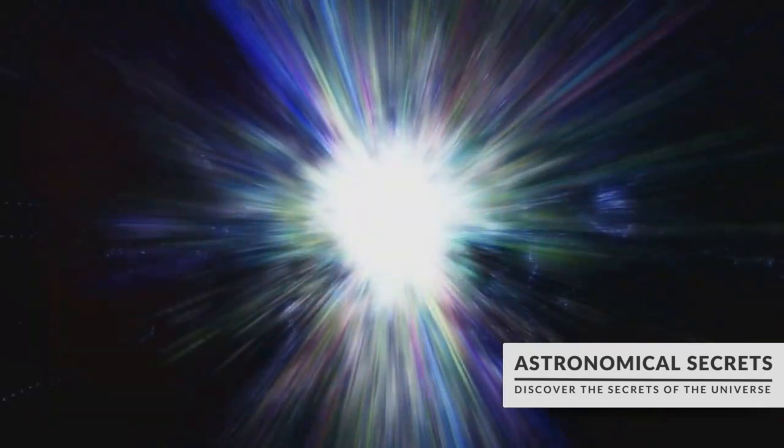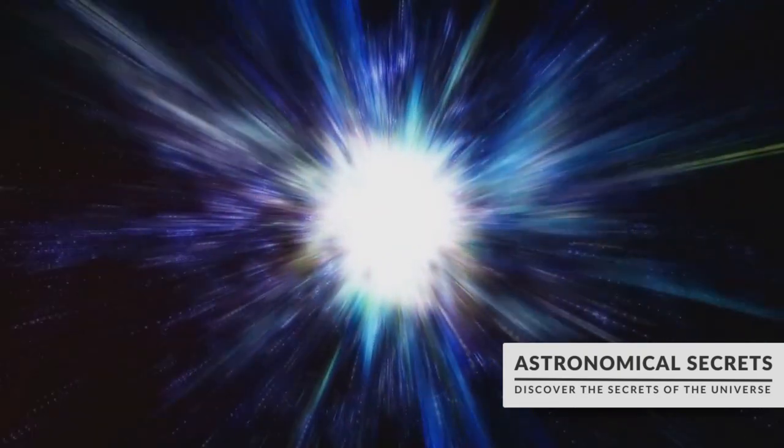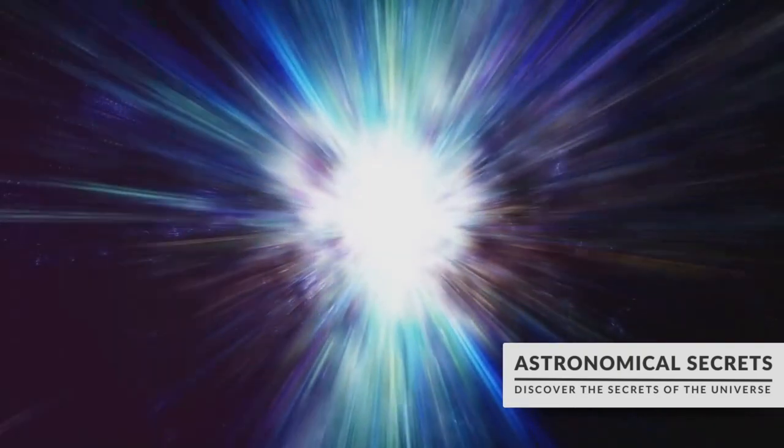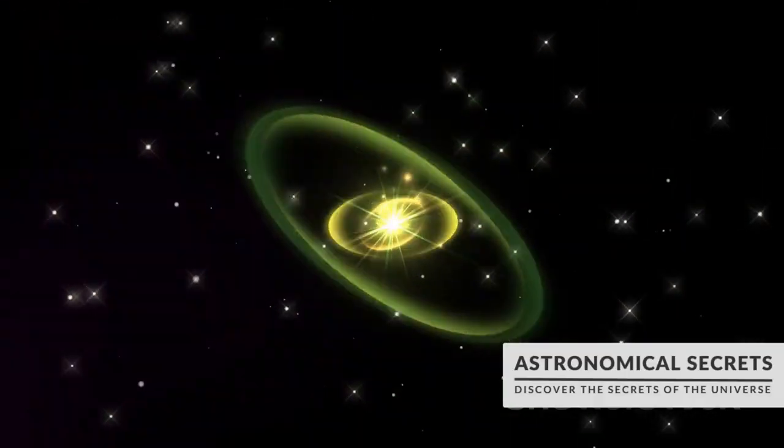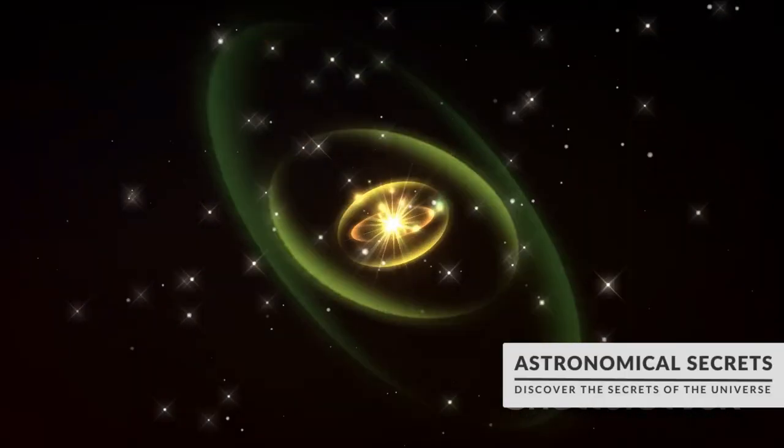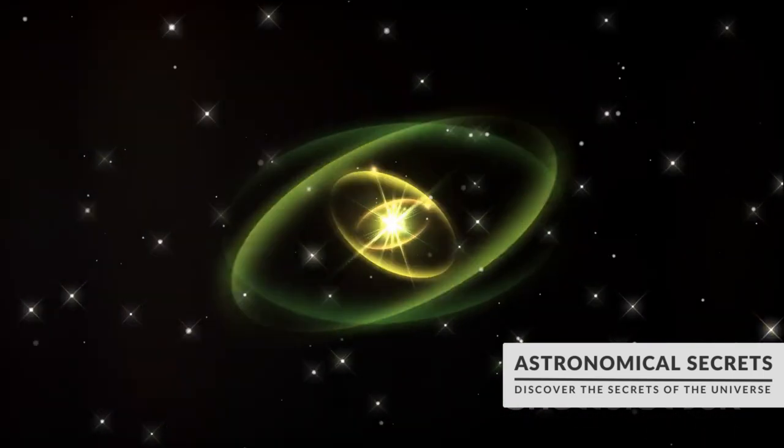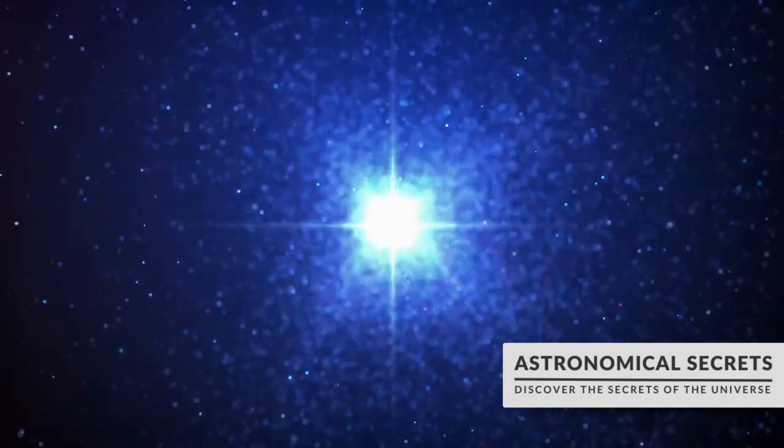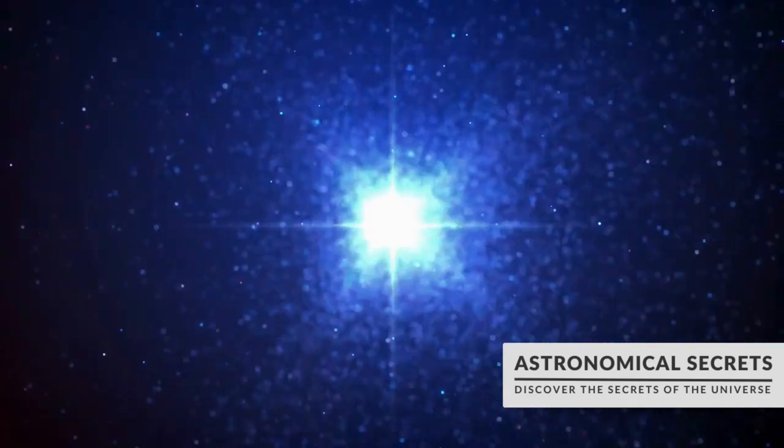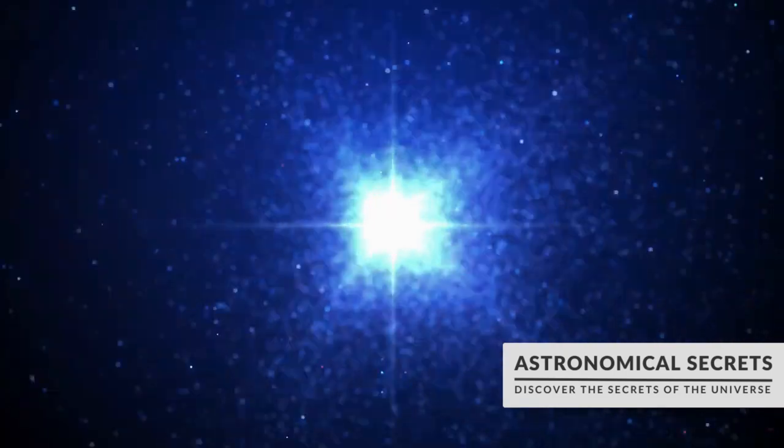As these stars spin, they emit beams of electromagnetic radiation from their magnetic poles. If these beams happen to sweep across Earth, we can detect them as regular pulses of light, hence the name pulsar. Now these beams aren't visible to the naked eye. They're mainly in the x-ray or radio part of the spectrum, but with the right equipment, we can detect them from billions of light-years away. This gives us a unique tool for probing the universe. In fact, the first planets outside our solar system were discovered around a pulsar.